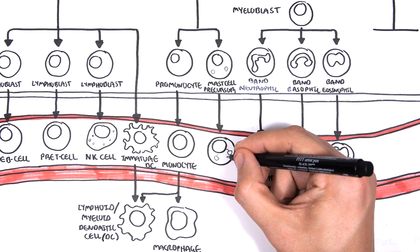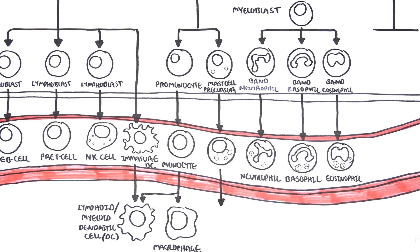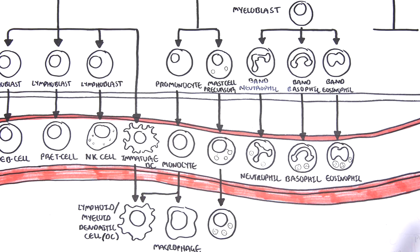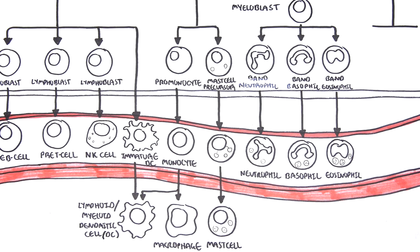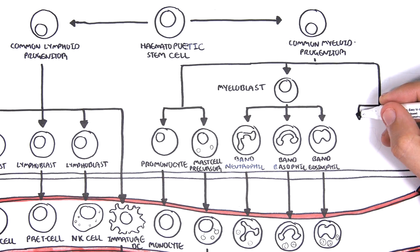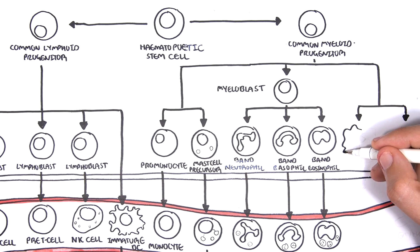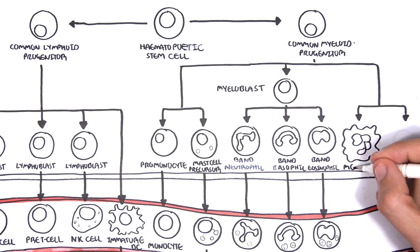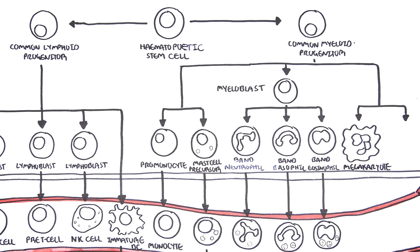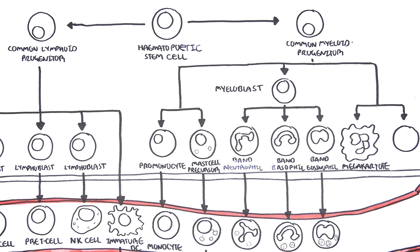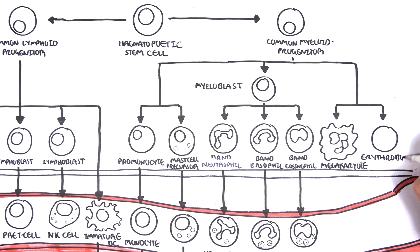The mast cell precursor can become mature mast cells once they enter circulation and move into tissues. Mast cells are very important in allergy, the inflammatory response, and hypersensitivity. Finally, the common myeloid progenitor cell can differentiate and become megakaryocytes with stimulation of thrombopoietin, a hormone produced by the liver and the kidneys. Or the myeloid progenitor cell can become erythroblasts through stimulation of erythropoietin, a hormone released by the kidneys.